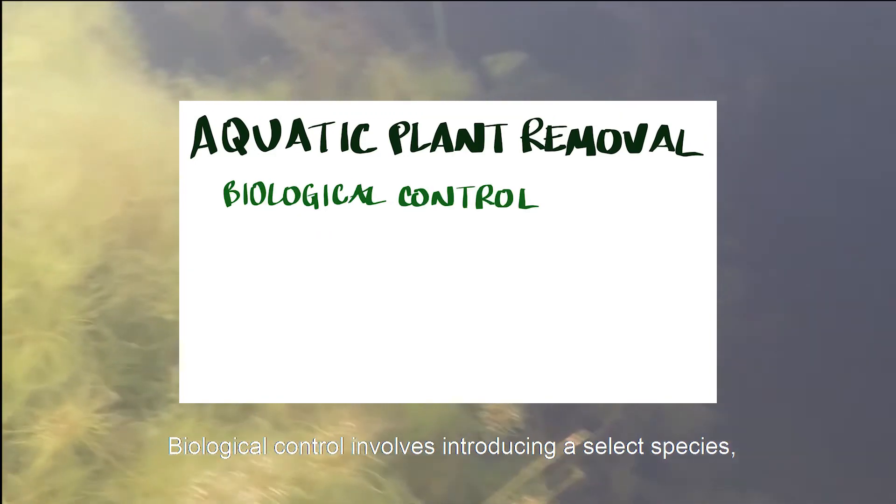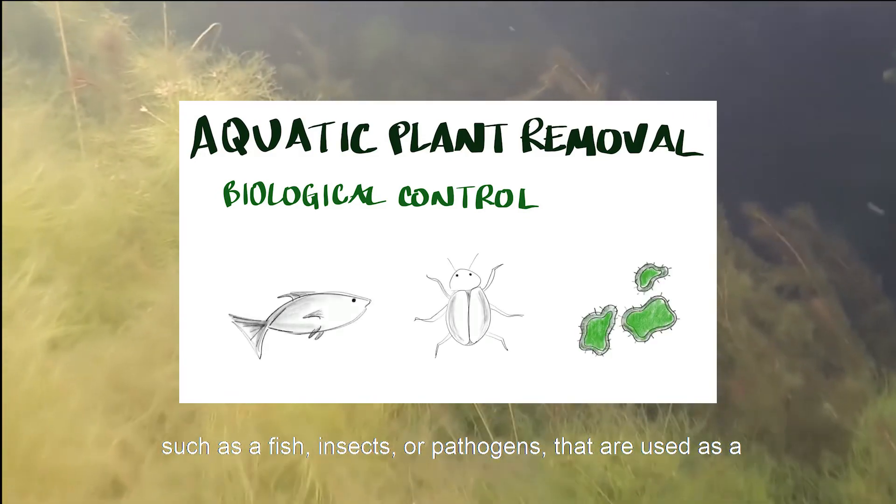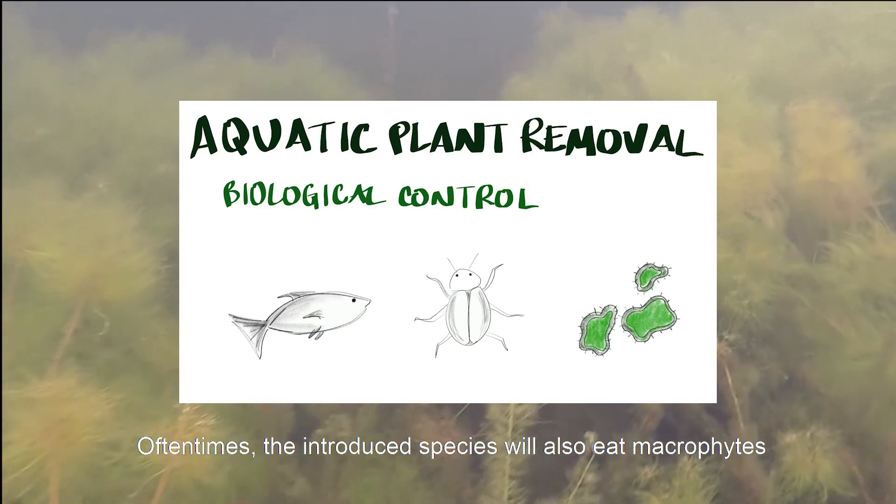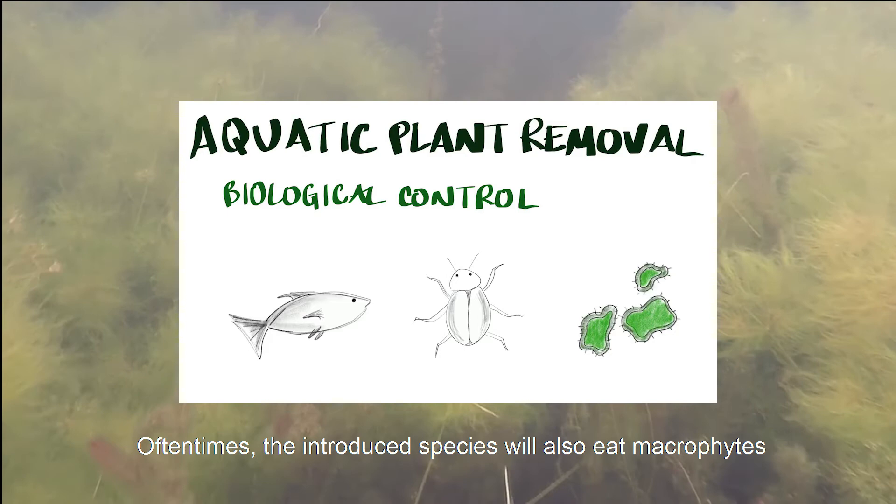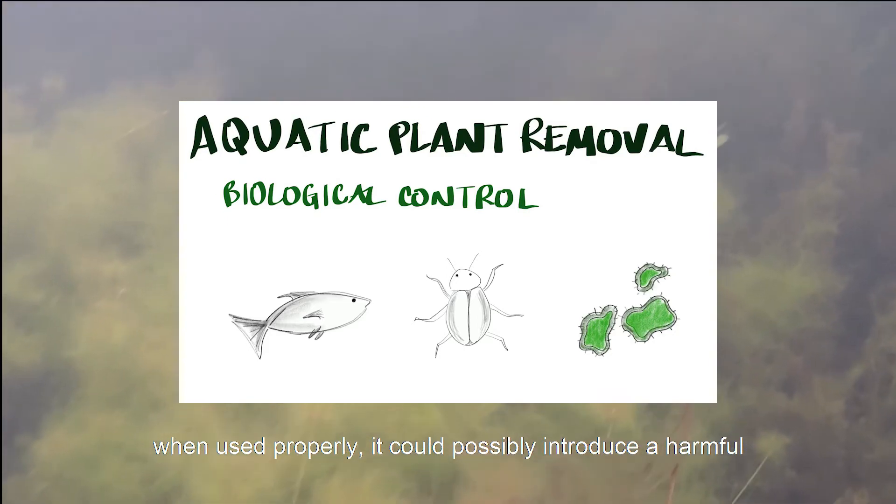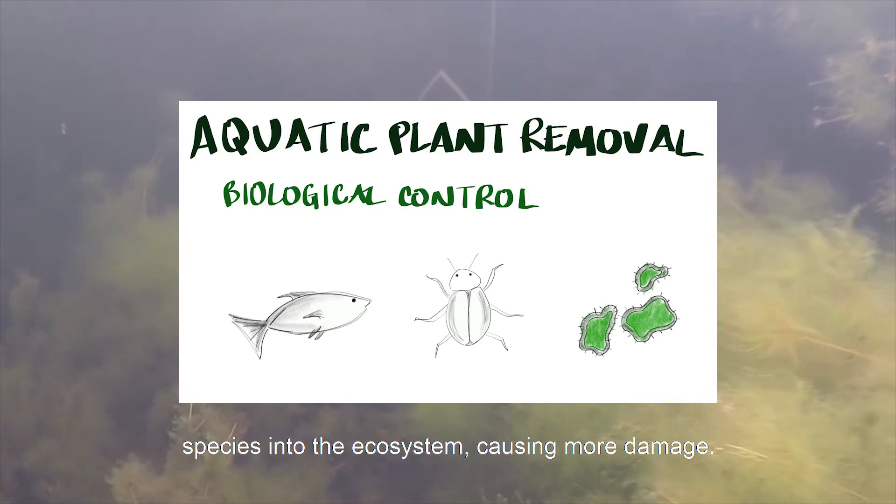Biological control involves introducing a select species, such as a fish, insects, or pathogens, that are used as a tool to manage or eradicate the targeted macrophytes. Oftentimes, the introduced species will also eat macrophytes not targeted for removal. While this method can be effective when used properly, it could possibly introduce a harmful species into the ecosystem, causing more damage.